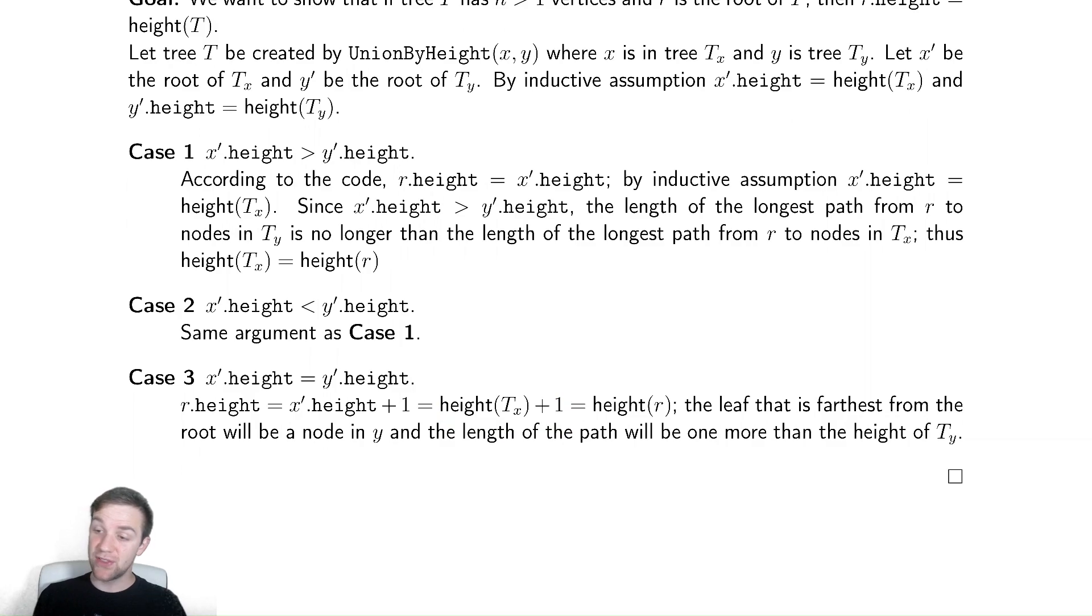For case three when they are equal, we're updating the height by one. So we update the height by one. Conveniently x prime dot height is equal to the height of tx because of our inductive assumption. And the leaf that is furthest from the root will be a node in y because the heights were the same.